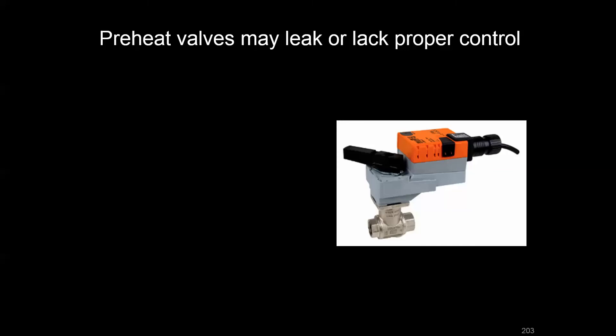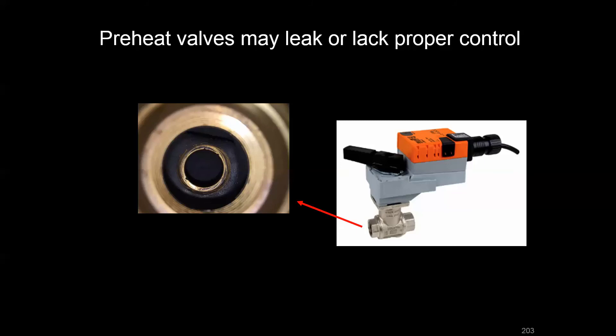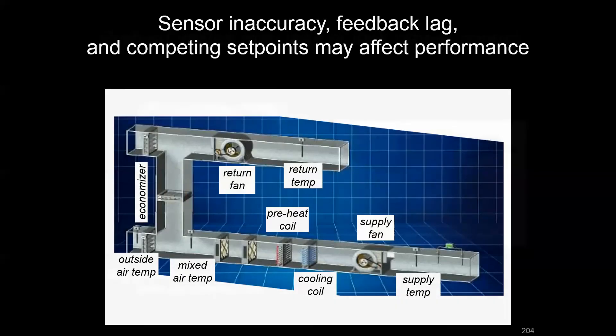Even with control logic to prevent preheat and cooling coils from fighting each other, a preheat valve with internal pits and grooves can allow a small amount of hot water through even at zero percent command. That hot water into the coil becomes a load the cooling coil must now pick up. There are also many other set point coordination and tight control loop requirements throughout the system.